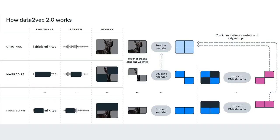How Data2Vec 2.0 works: The general idea of self-supervised learning is for machines to learn the structure of images, speech, and text simply by observing the world. Advances in this area have led to many breakthroughs in speech (e.g., WAV2Vec 2.0), computer vision (e.g., masked auto-encoders), and natural language processing (e.g., BERT).